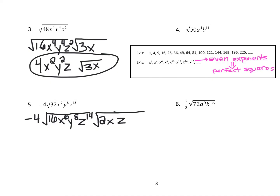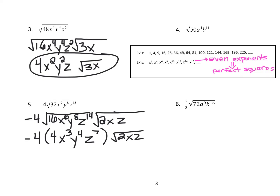So now I'm going to bring down the negative 4 and open a parenthesis to separate it from what I'm putting here. When I take all this out of the radicals: the square root of 16 is 4; the square root of x to the 6th is x to the 3rd — we just cut the exponent in half; the square root of y to the 8th is y to the 4th; and the square root of z to the 14th is z to the 7th. Then I bring down the leftover radical. To finish, I just multiply: negative 4 times 4 gives me negative 16, x to the 3rd, y to the 4th, z to the 7th, times the radical of 2xz. And there we have it — that's the answer.